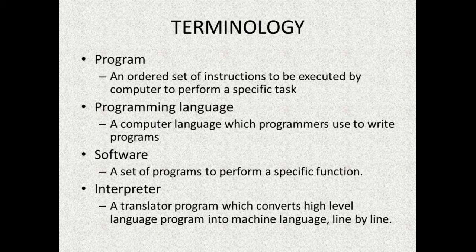An interpreter reads the program line by line and converts it into machine language. It reads the first line, checks for errors, and if everything is okay it converts that line into machine language, then moves to the second line, and so on. If it finds an error in a line, it waits until the error is removed before moving to the next line. A compiler, on the other hand, reads the whole program at once, converts it to machine language, and then generates a list of all errors found.